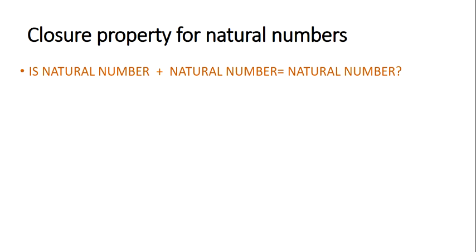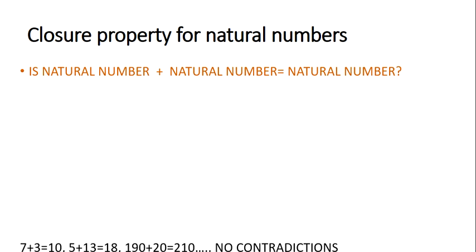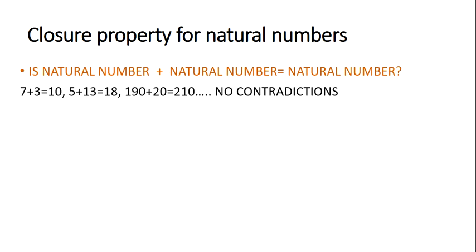For addition, a natural number plus a natural number gives you a natural number. If you add two natural numbers it will always give a natural number. For example, 7 plus 3 is 10, 5 plus 13 gives 18, 190 plus 20 gives 210. You will find no contradiction to this rule. So we can say that natural numbers are closed under addition.